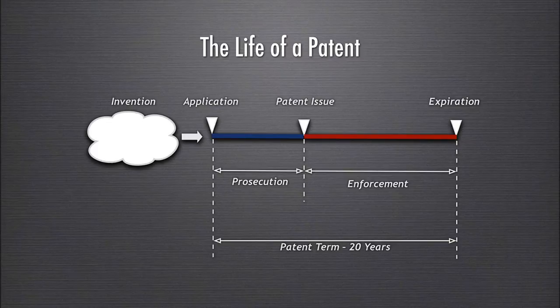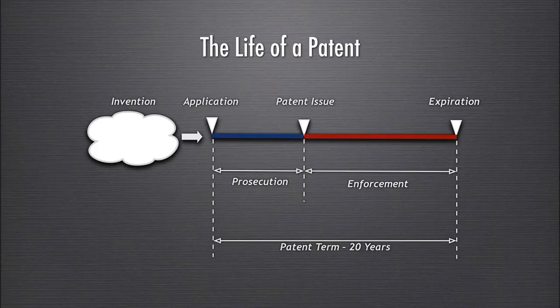The patent term is 20 years from the date of application, which means you have an incentive as a patent applicant to get through the prosecution phase as quickly as possible. On the other hand, you also have an incentive to get the broadest patent possible. You want to be both quick and yet accurate and broad. Then 20 years after you file, the patent expires.